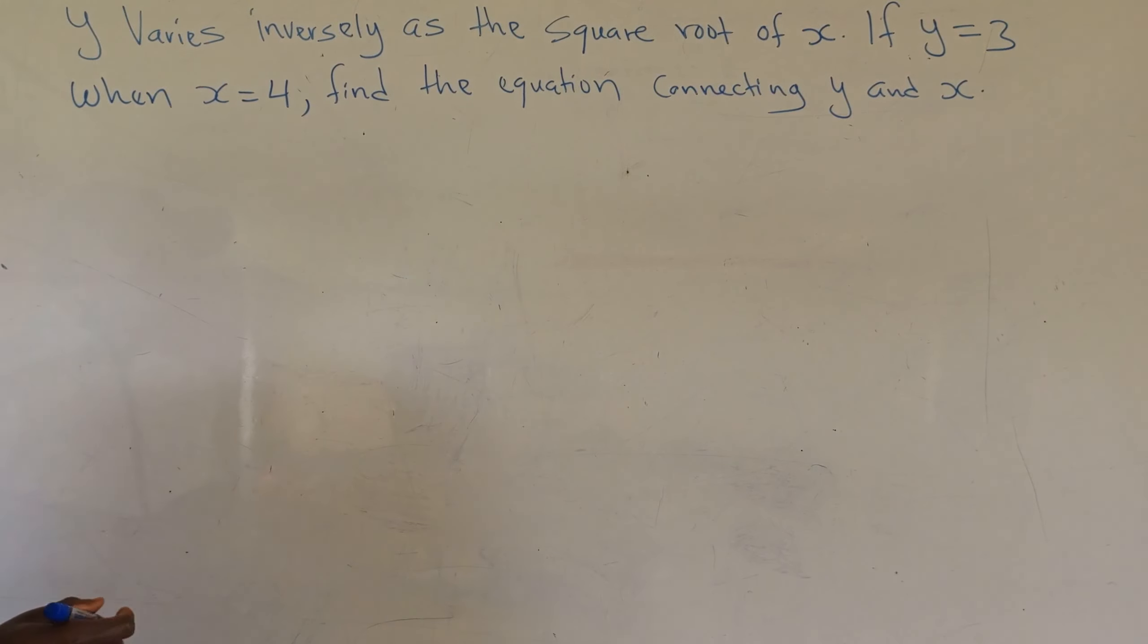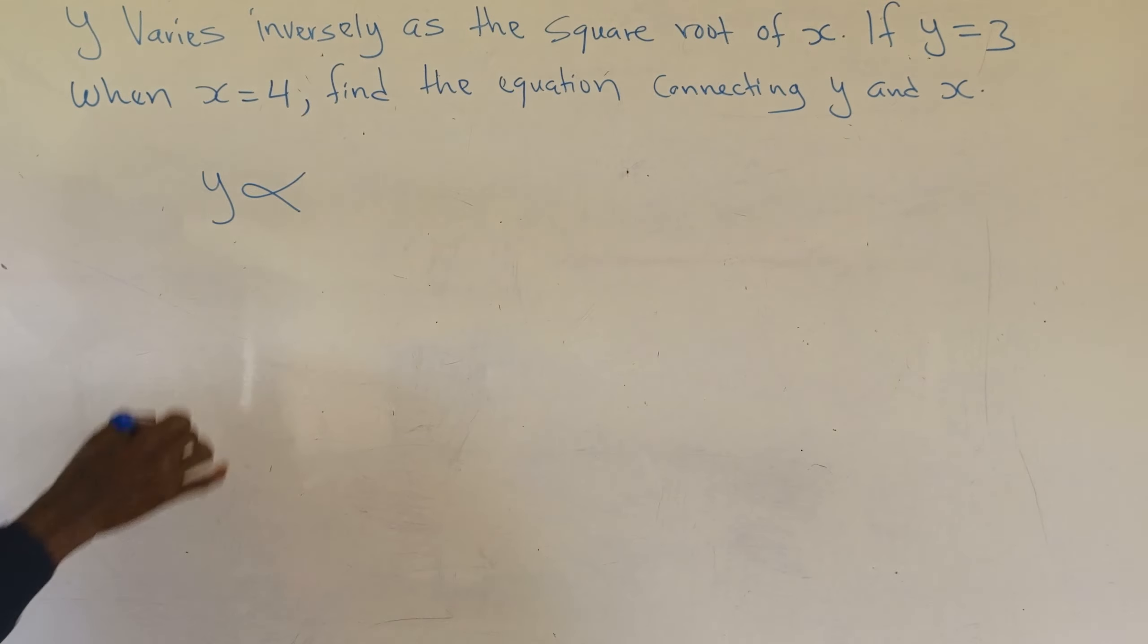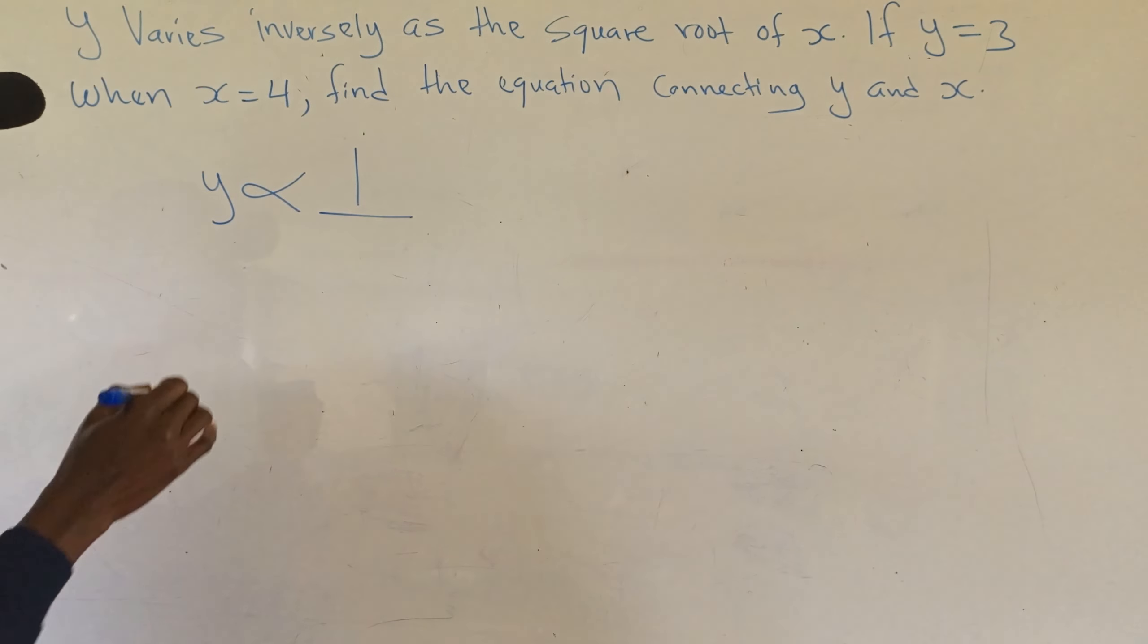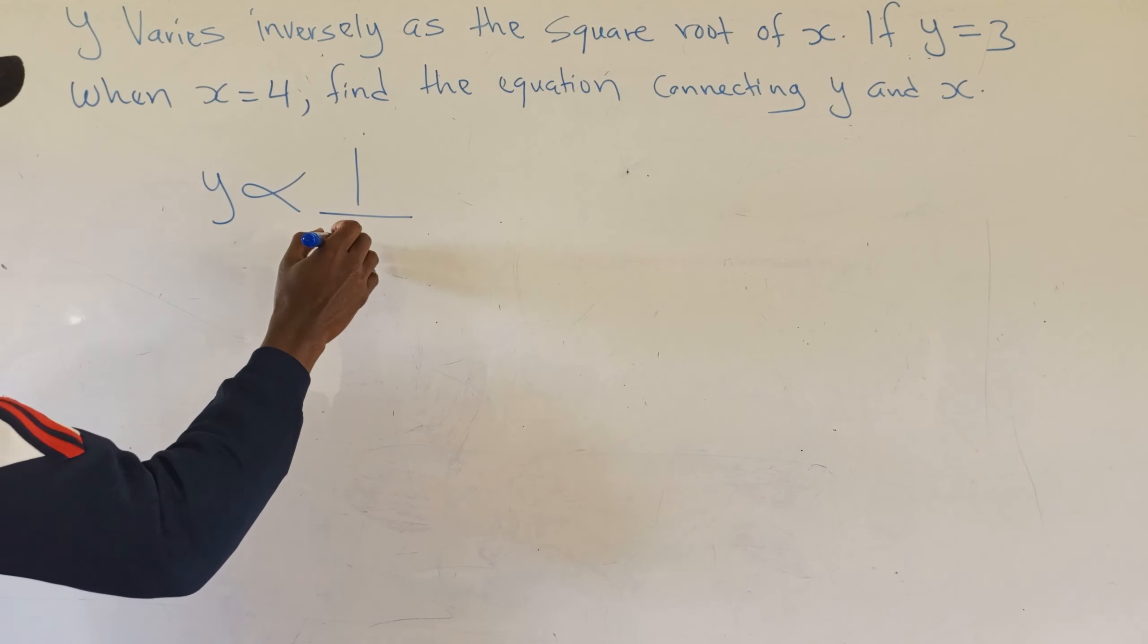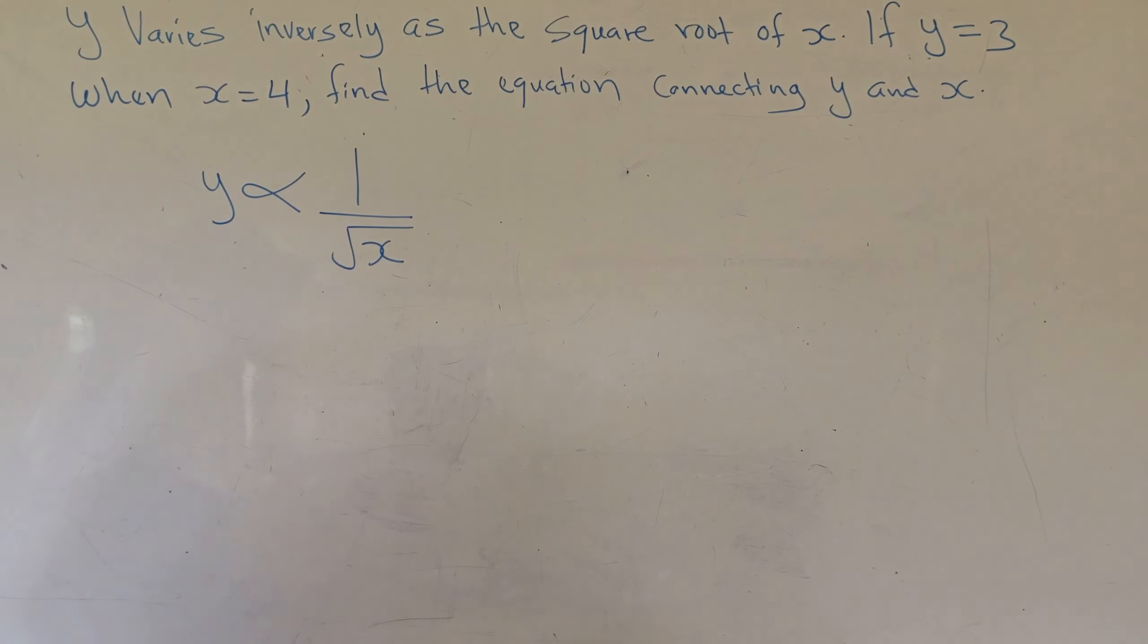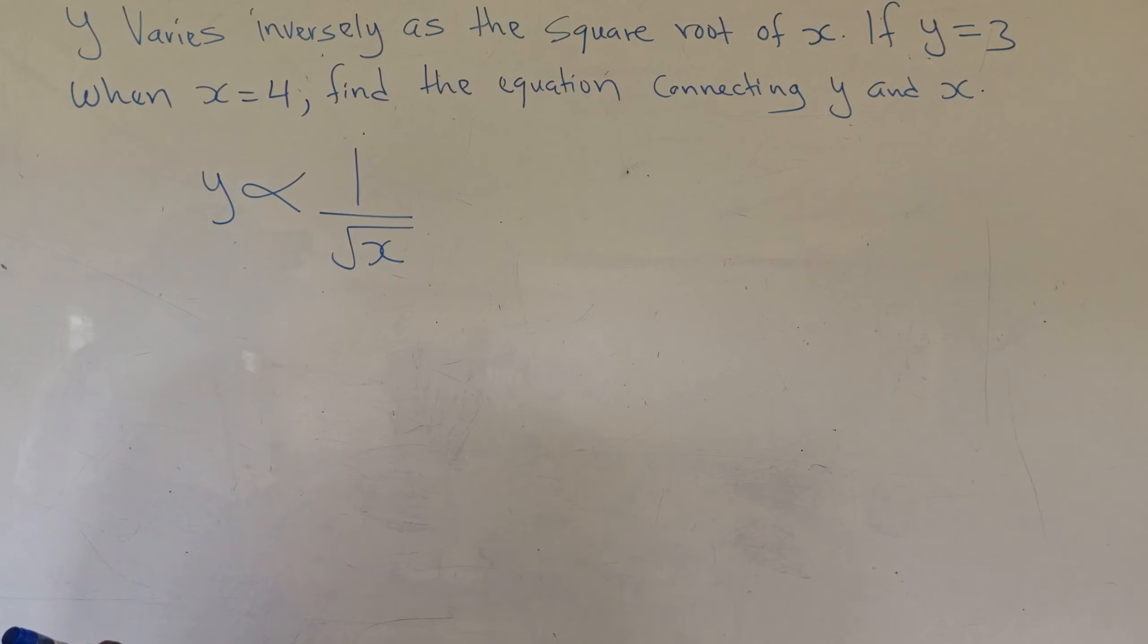Now, in this kind of question, we say y varies—that's the variation sign—inversely, that is 1 over, as the square root of x. This is how you connect y and x using inverse variation.